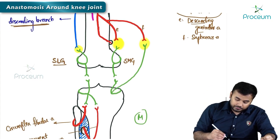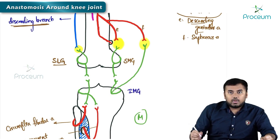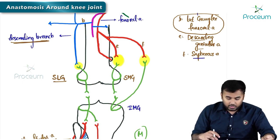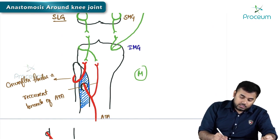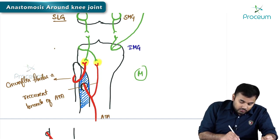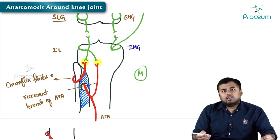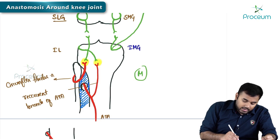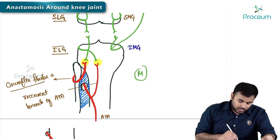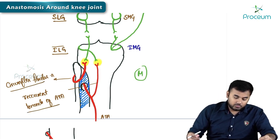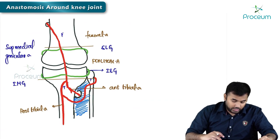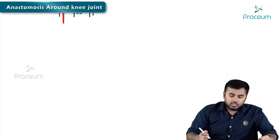The third anastomosis is formed between the inferior medial genicular artery with F — the saphenous artery. Next, you also see two more anastomoses. Wherever the fibula is, that is the lateral side. The inferior lateral genicular artery anastomoses with the circumflex fibular artery and the recurrent branch of the anterior tibial artery. So these are the complete anastomoses formed around the knee joint.